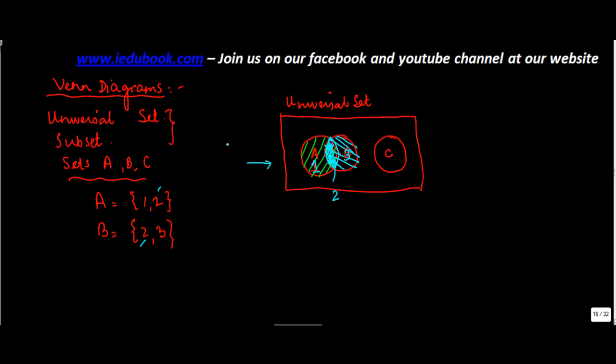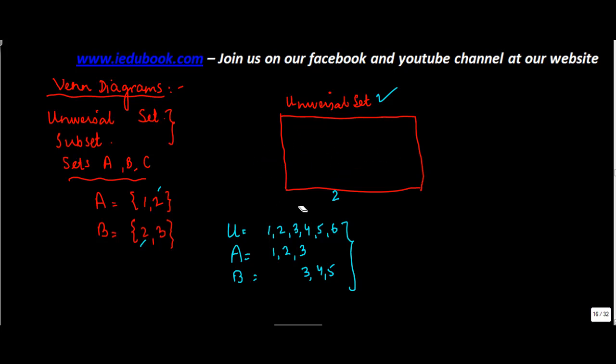So through Venn diagrams, basically you represent the relationships and the contents of a particular set. Let's say you have the universal set equals to {1,2,3,4,5,6}. You have A is equal to {1,2,3}, and you have B equals to {3,4,5}.